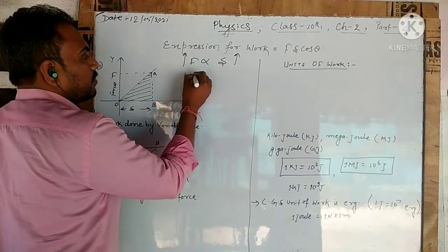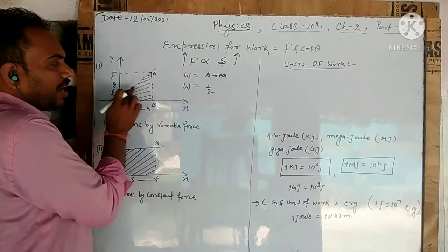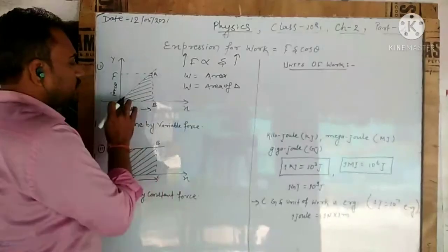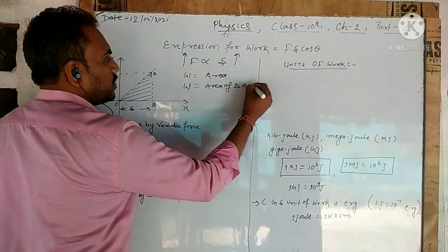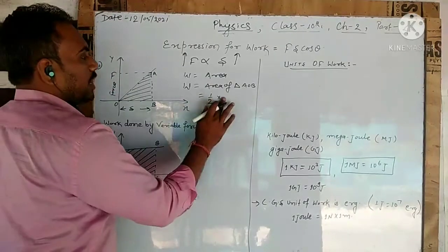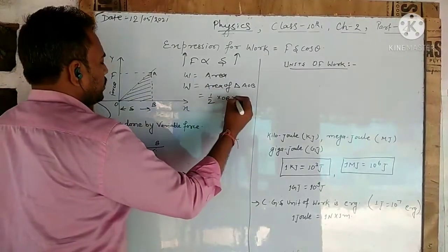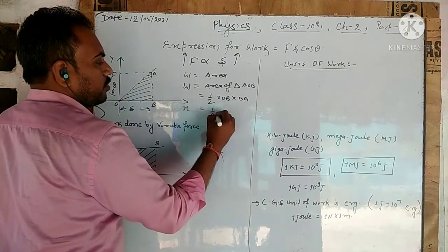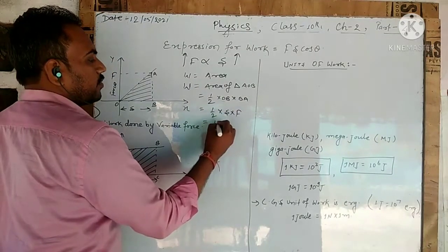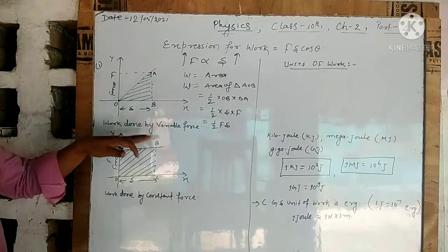As displacement increases, the force is just increasing. So the area occupied by this graph will give you the magnitude of work done. Work is equal to the area of the triangle — let's name it triangle AOB. Since it is a right triangle, work = ½ × base × height = ½ × displacement S × force F. So the work done by a variable force is W = ½ F·S, which we get from this graph.